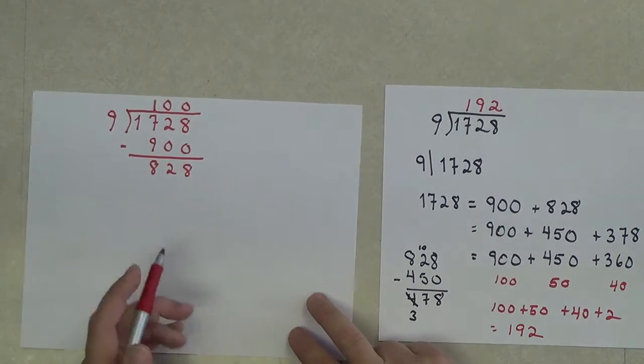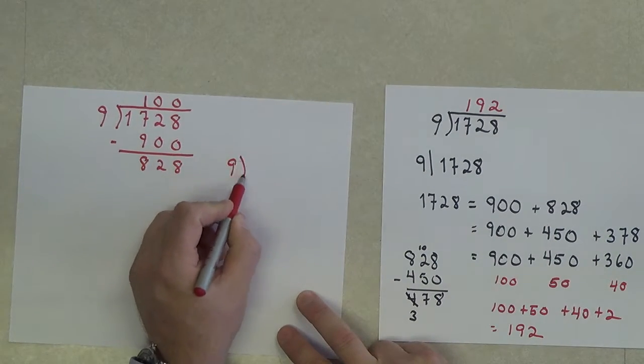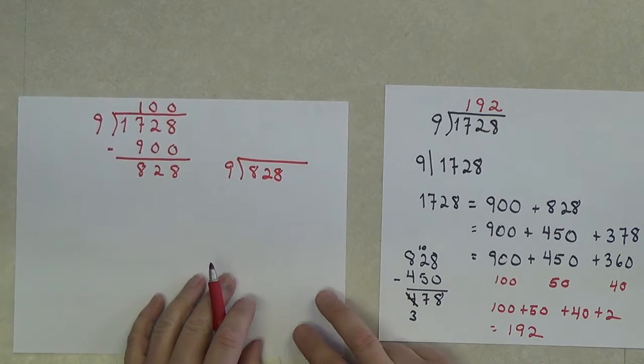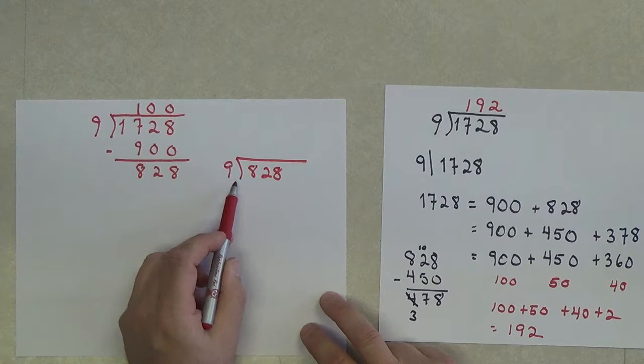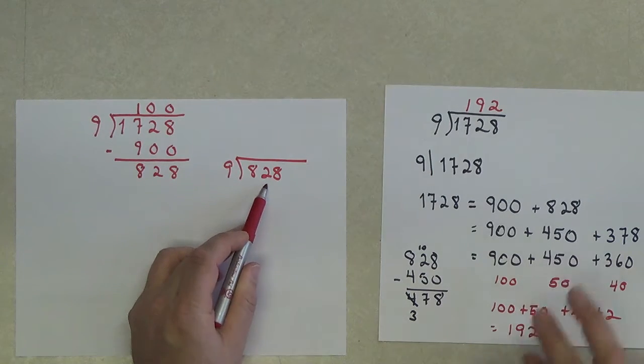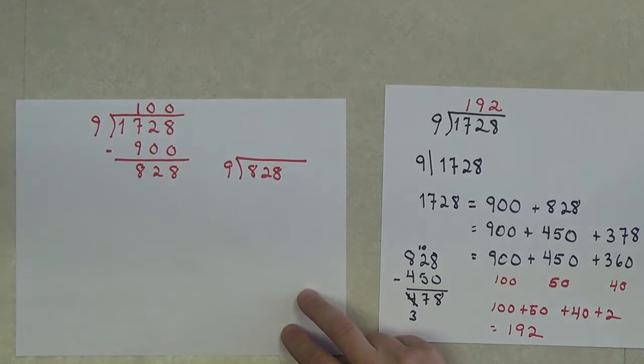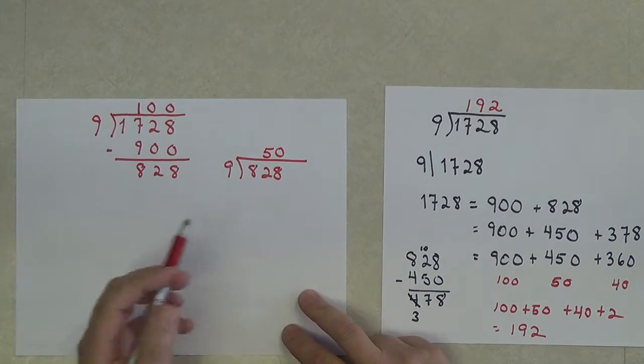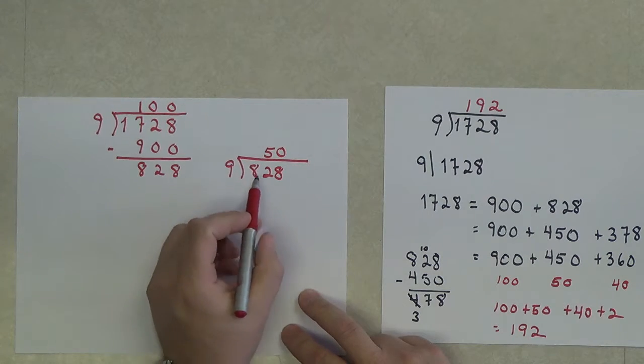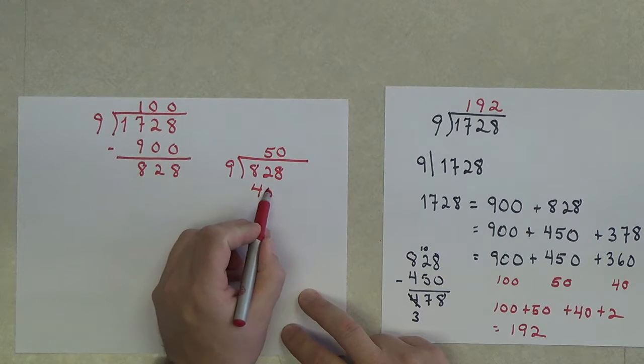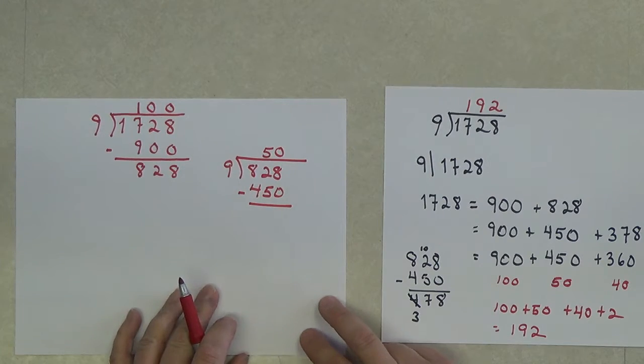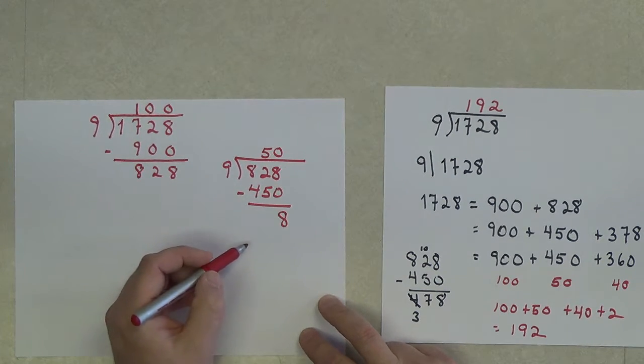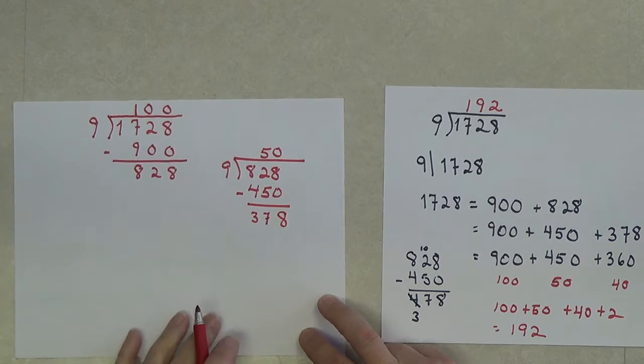So now we have a new problem: 9 divided into 828. Well, we can say, and try to go for the biggest guess possible, but to match my problem, I'm going to guess small and say maybe it's only 50 times. Because I know 5 times 9, or 50 times 9 in this case, is 450. And I'm going to do some subtraction, and I'm going to get a difference of 378. Notice, that's the 378 we had here.